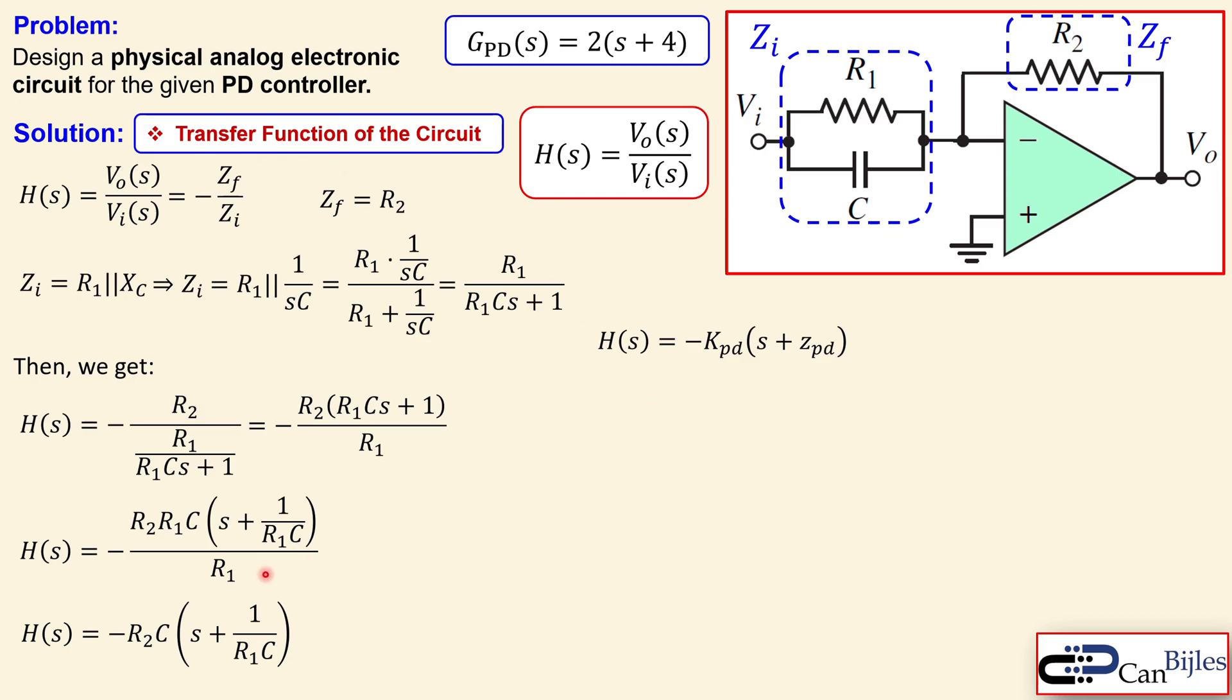Now we can recognize the following. We can also make the KPD which is the PD controller gain and also the ZPD which is the PD controller zero. So we can say the KPD is just this value, the product is R2 times C and we have also the zero which is 1 over R1 times C.